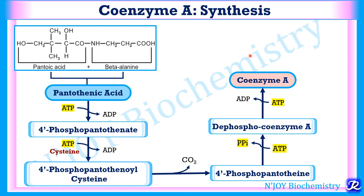For the formation of coenzyme A from pantothenic acid, five high energy bonds are required: the first ATP, a second ATP, and since there is formation of pyrophosphate with subsequent release of two inorganic phosphates, that counts as two high energy bonds, plus the fifth one. So five high energy bonds are required in total, and pantothenic acid itself is derived from pantoic acid and beta-alanine.